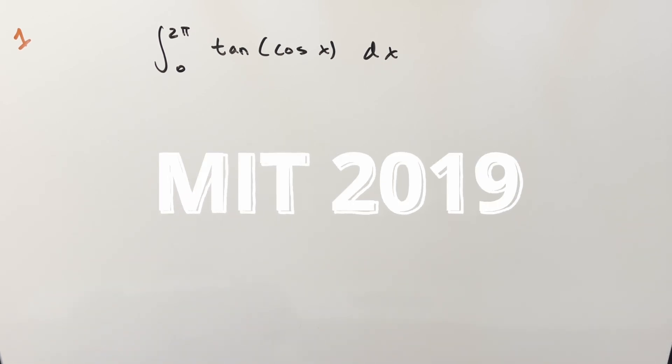Okay, we have here today another integral. This one's from the MIT integration B 2019 problem number one. We have the integral from zero to two pi, tan of cosine x dx.